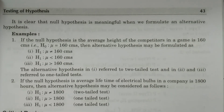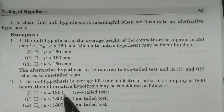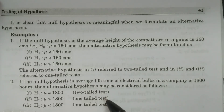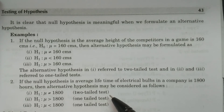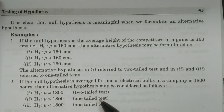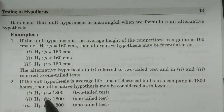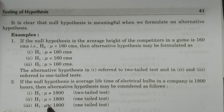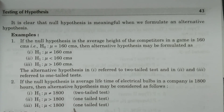One more important point: the alternative hypothesis decides whether the test is one-tail or two-tail, which has significance in calculating the tabulated value — also called the significant value — taken from pre-constructed tables. If the alternative hypothesis uses 'not equal to,' it is a two-tail test. If it uses 'greater than' or 'less than,' it is a one-tail test. If it is 'greater than,' it is called a right-tail test; if 'less than,' it is a left-tail test.